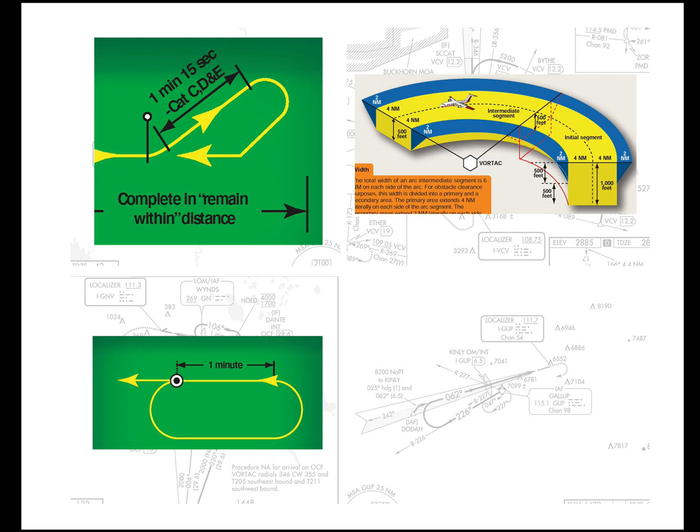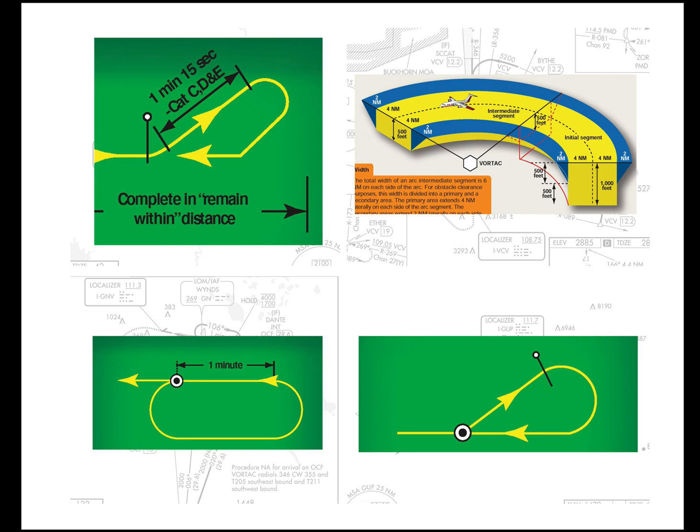Looking at more material in the Instrument Procedures Handbook, we know there's a lot of content on how to do a procedure turn, a holding course reversal, and a DME arc. All you get for the teardrop is one little diagram — and it doesn't tell you anywhere how to execute the lobe. And the lobe is far from trivial.